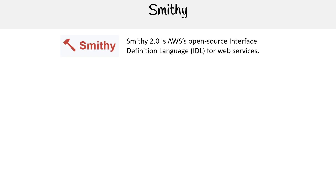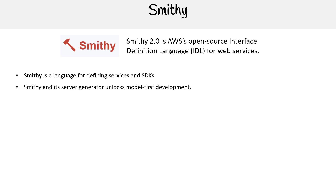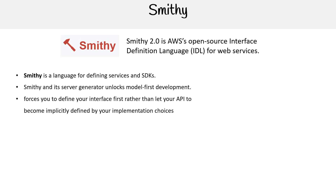Smithy 2.0 is AWS's open source interface definition language (IDL) for web services. It is a language for defining services and SDKs. Smithy and its server generator unlocks model-first development and forces you to define your interface first, rather than letting your API become implicitly defined by your implementation choices.